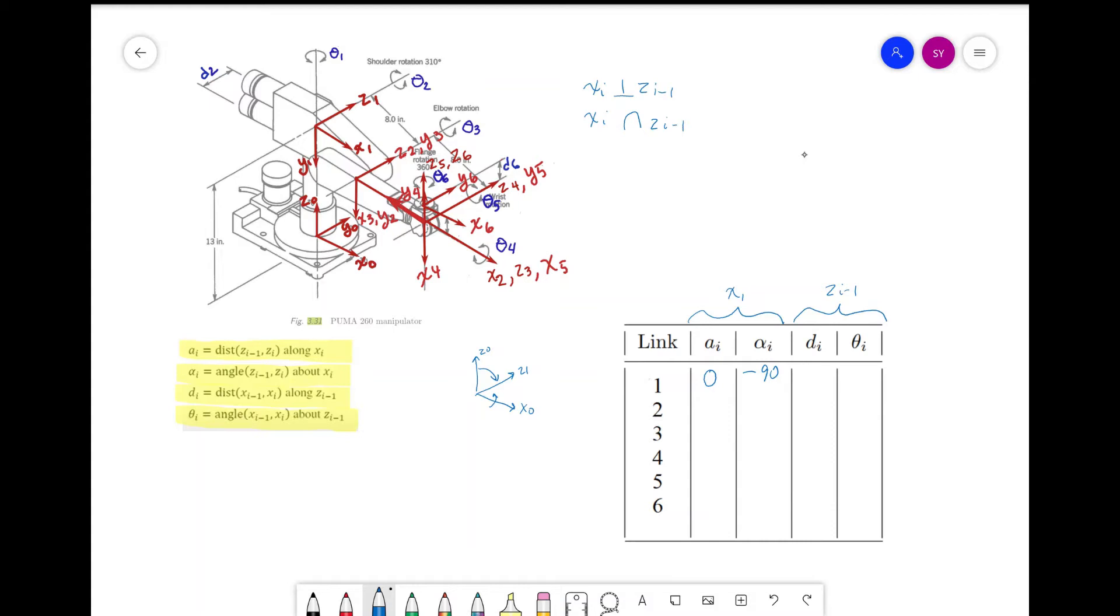For d_i, we have 13 inches. And for theta, we have a rotation of theta_1 we need to account for and no other rotation needed to align the x-axis.